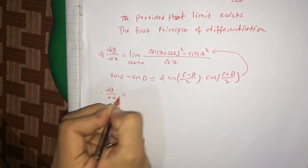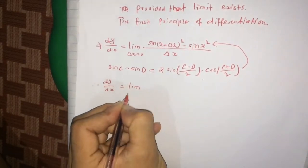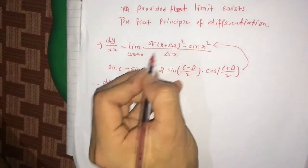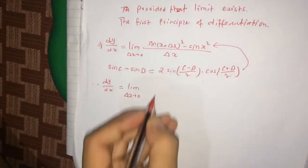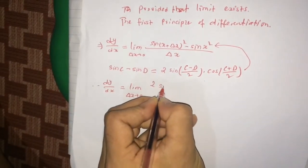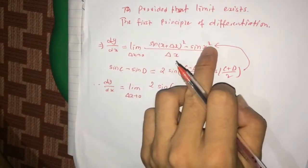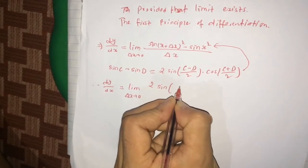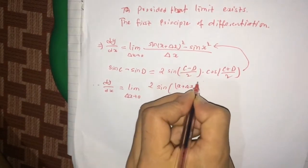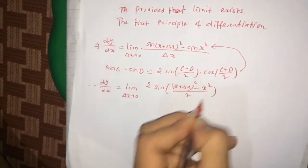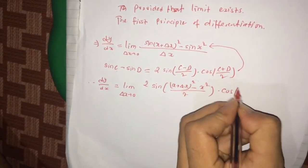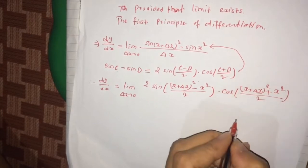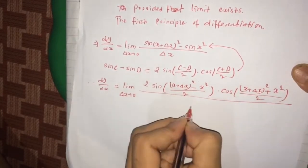So dy/dx = limit as Δx tends to 0. Here C = (x + Δx)² and D = x². So we write 2 · sin[((x + Δx)² − x²) / 2] · cos[((x + Δx)² + x²) / 2], all divided by Δx.